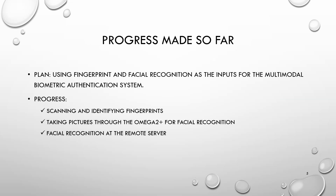Progress made so far: the plan is to use a fingerprint scanner and a camera for facial recognition to feed in the inputs. The fingerprint scanner takes fingerprints, and the camera will take a close-up shot of a person which will get sent to a server to be processed and identified. So far we have successfully been able to scan and identify fingerprints. The Omega 2 Plus is able to capture relatively decent pictures comprehensible by the remote server, and the facial recognition software is also able to correctly identify and recognise faces.